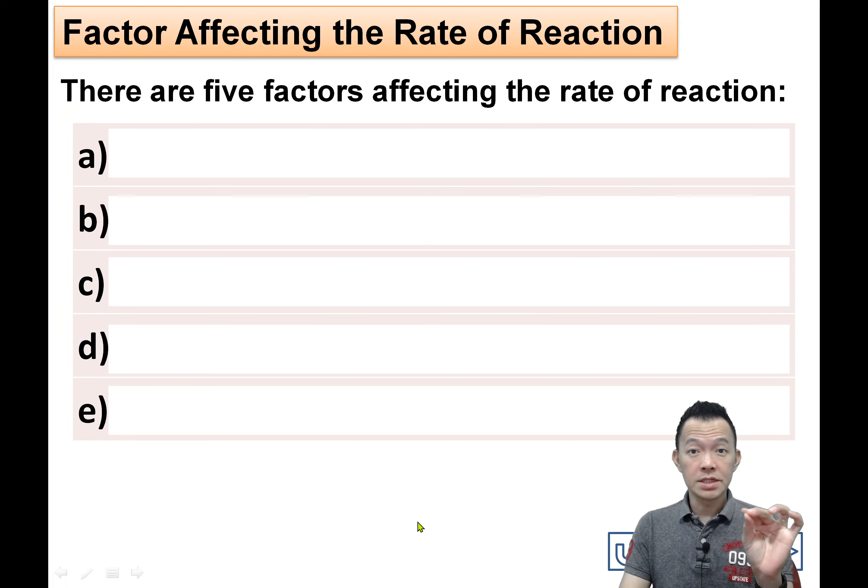Hi, Form 4, Chapter 7, Chemistry. Video number 7 or 8 and page number 8. Let's start. So after we finish all the calculation about the average rate of reaction and the instantaneous rate of reactions, and now what are the factors affecting the reaction?